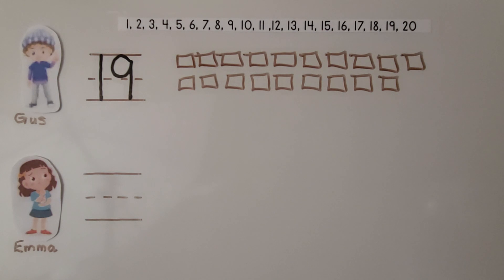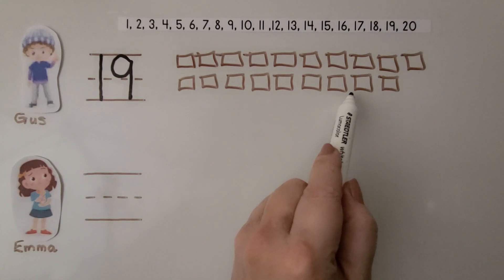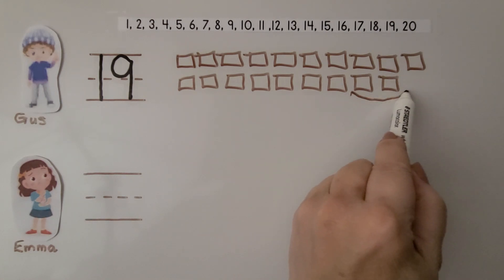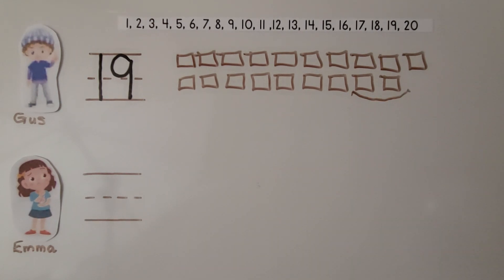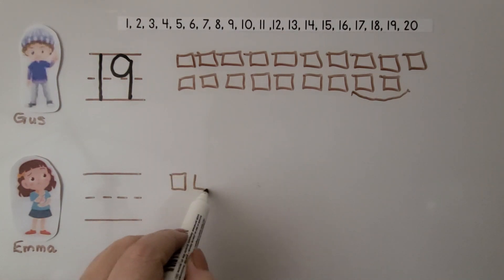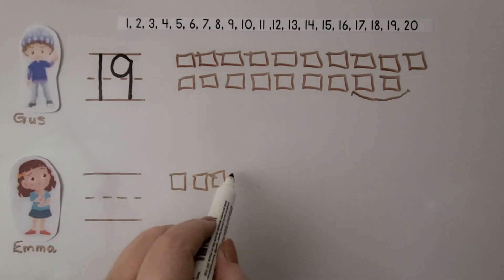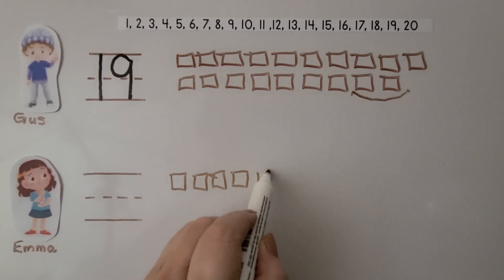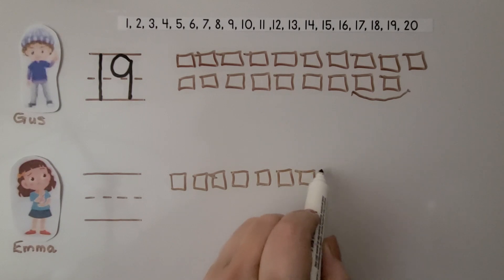Gus has a number that is 2 greater than Emma's crayons. Who has the greater number of crayons? Well, if he has a number that is 2 greater, that means he has 2 more — these 2 more than Emma. We can draw Emma's cubes. We make 10 cubes for 10 ones, then count up: 2, 3, 4, 5, 6.